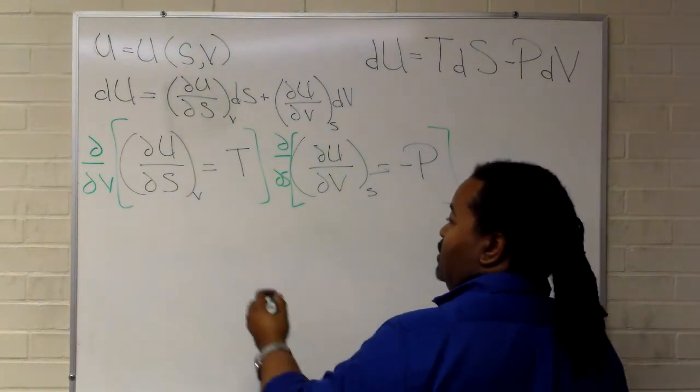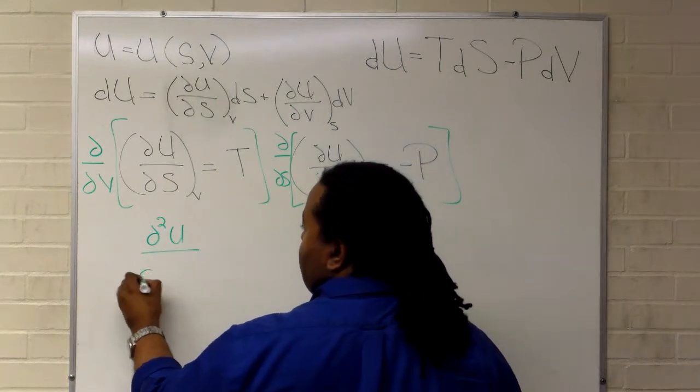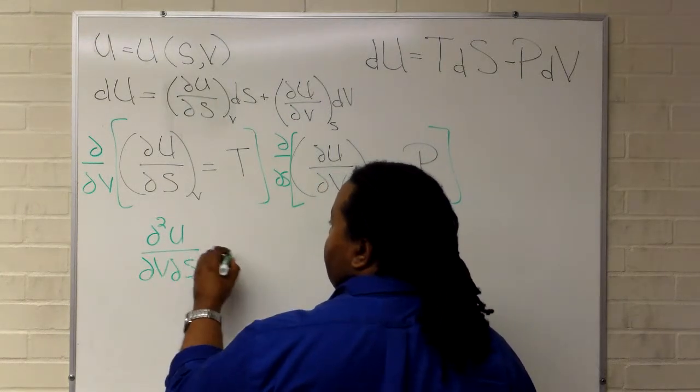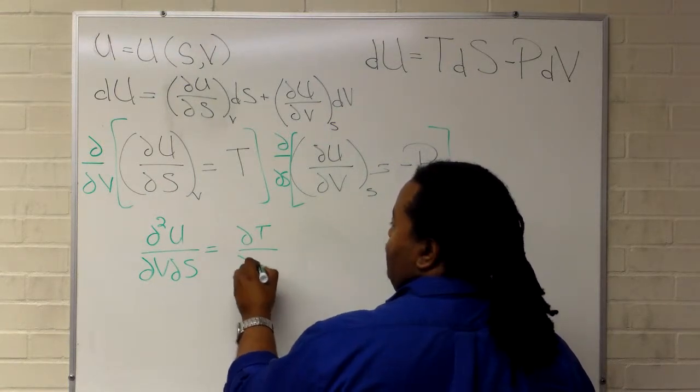So this gives us then that the second mixed partial, partial v partial s, has to be equal to partial T partial v.